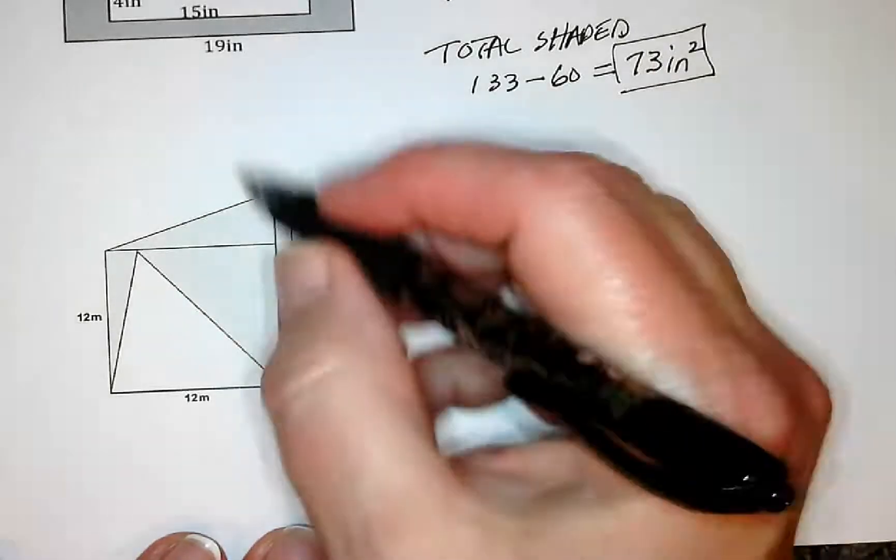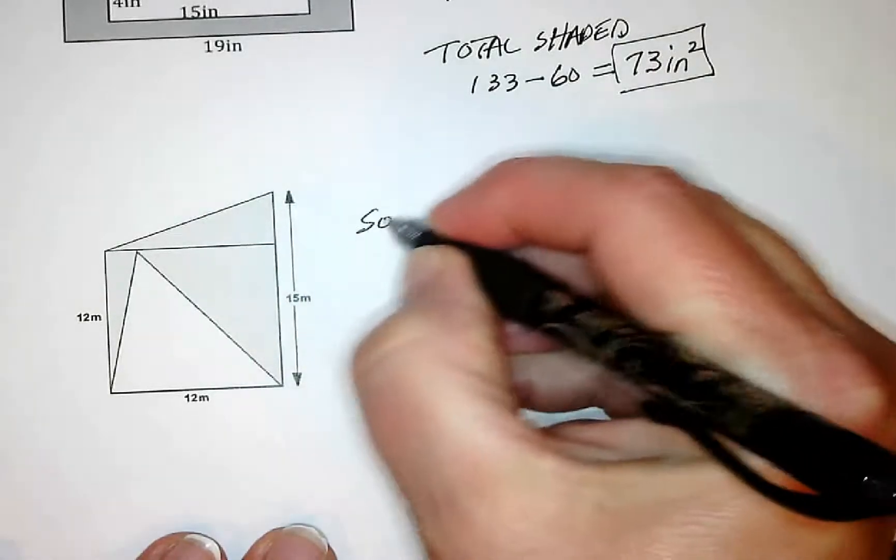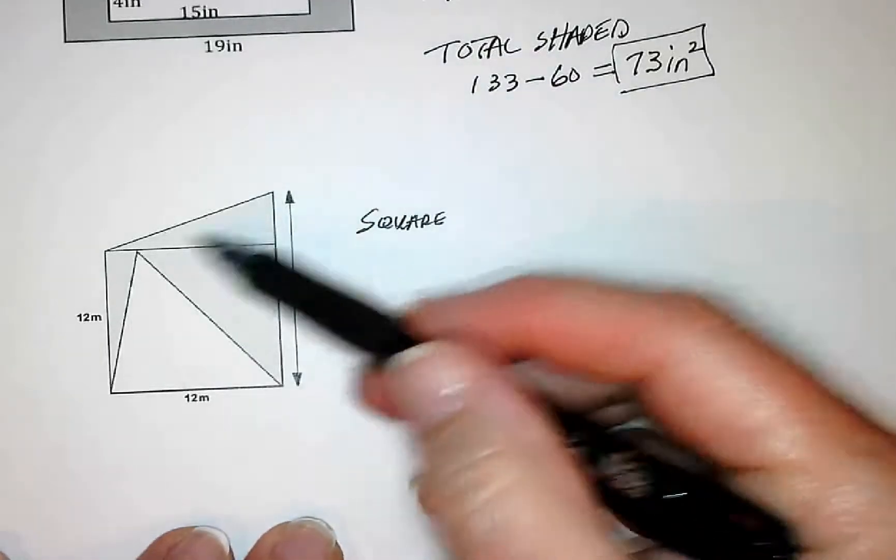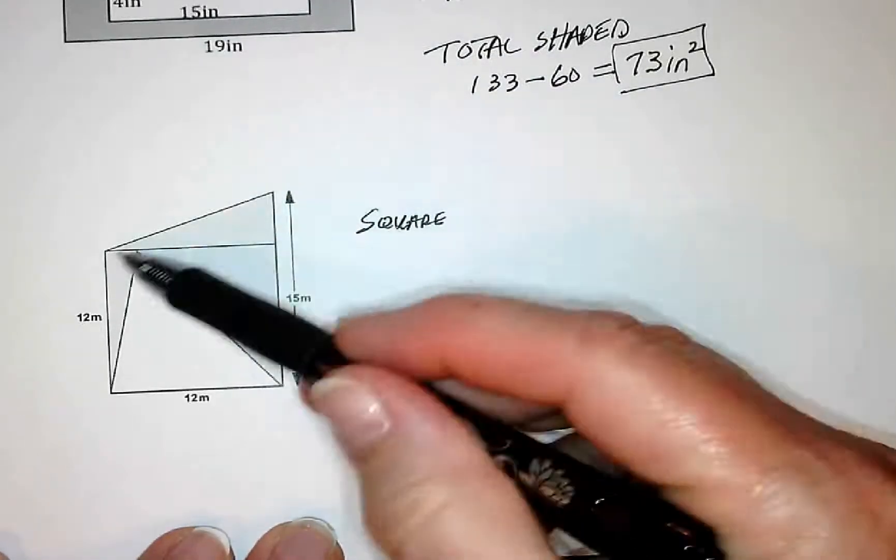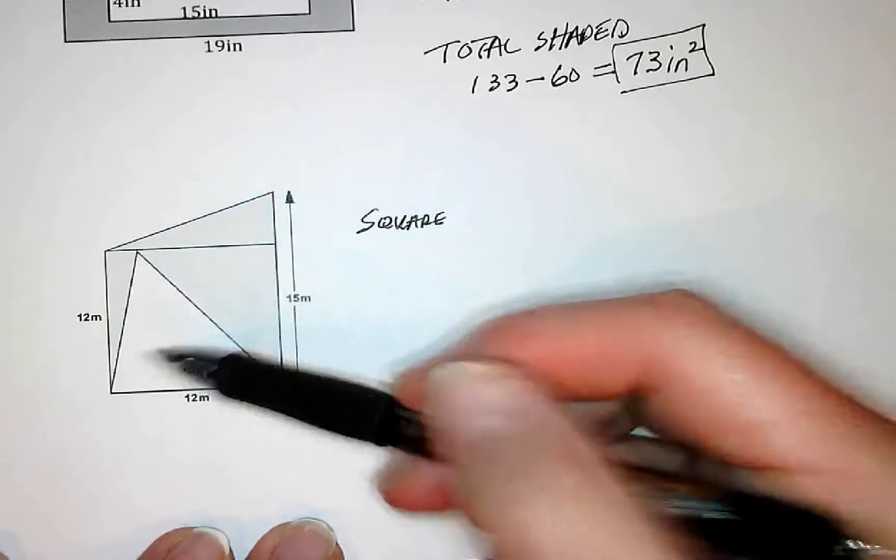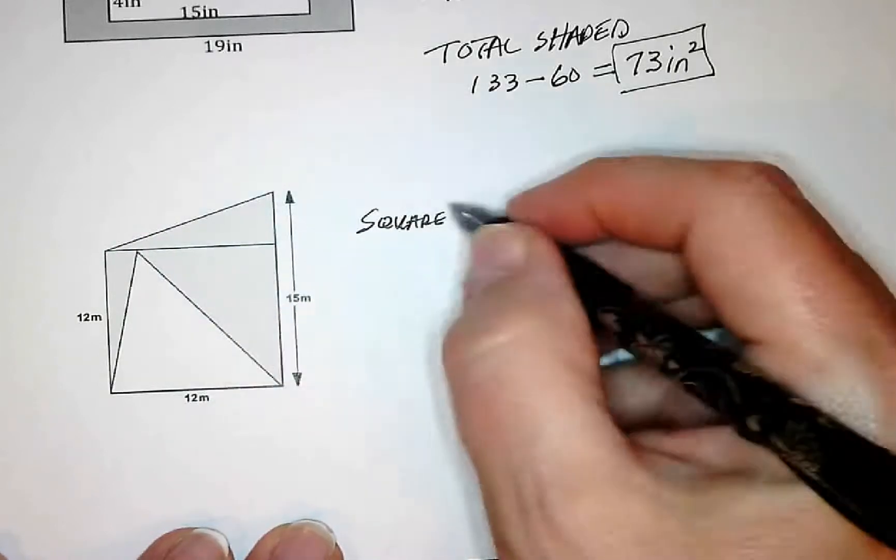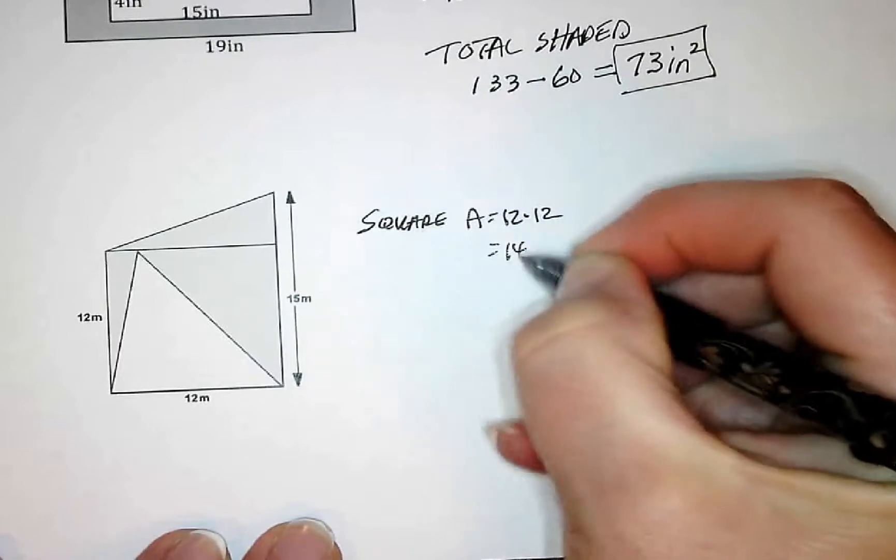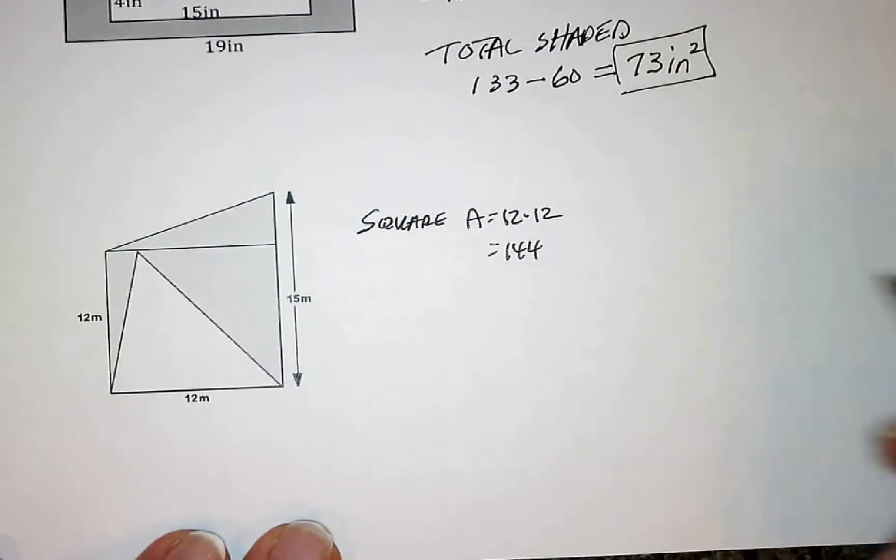So let's first of all find the area of the square. Because this is going to be one where we're going to find the area of everything within these borders here, and then we're going to find the area of this triangle and take it out or subtract it. So the square is just going to be 12 times 12. So 144 is the area of the square.